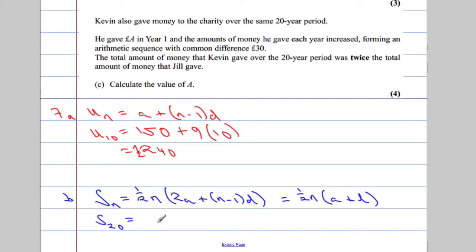So, S of 20 is going to give me 1 half times 20 times 2, and A we worked out as 150, the first term is 150, plus N minus 1, so which is going to be 19, lots of the common difference, which is 10. So, 19 times 10.